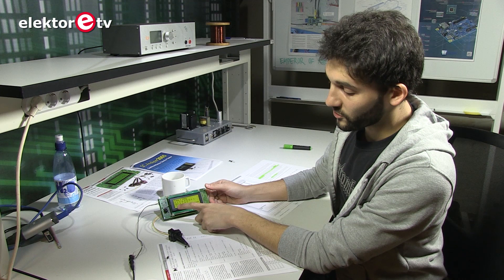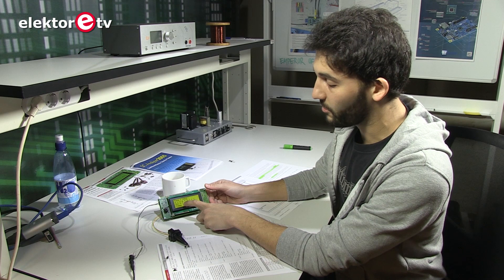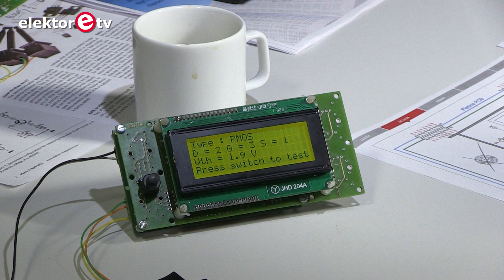And we also know, in BJTs it makes sense to mention the gain, but in a MOS type of transistor, it makes more sense to mention the threshold voltage. And now we know that this body works perfectly fine, and we have 1.9 volts.